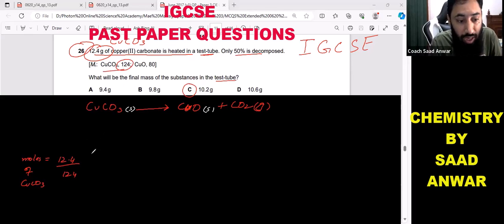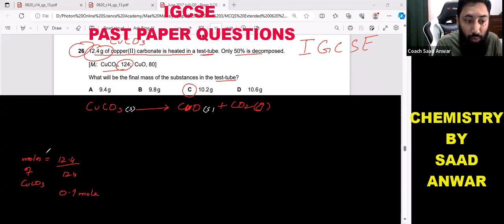So when I divide by using this machine, 12.4 divided by 124, this will be equal to 0.1 moles. So moles of copper carbonate is 0.1.